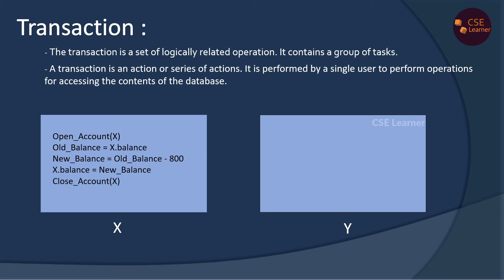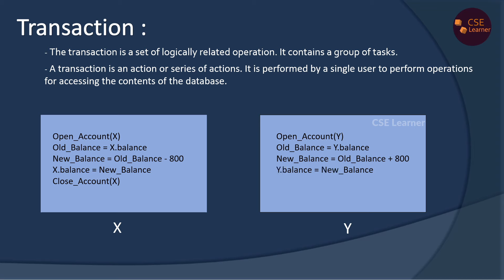Then Y is opened. The balance is retrieved, and $800 is added to the balance. The balance is updated, then Y is closed. $800 in the balance — this is a group of tasks. This is the transaction.